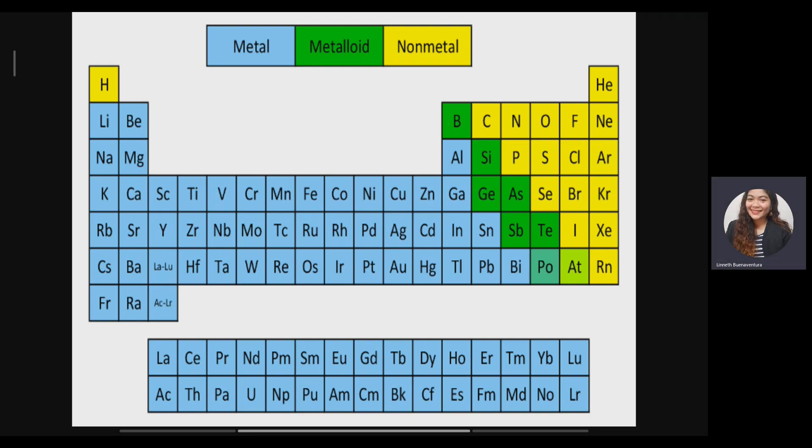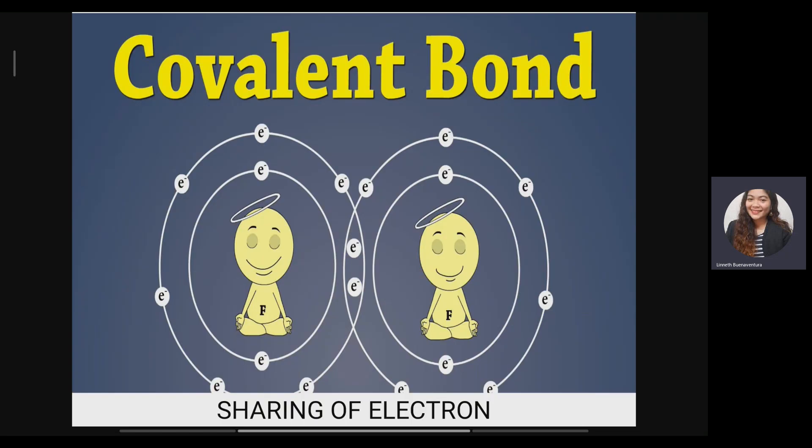For example, nitrogen oxide — nitrogen is non-metal, same as oxygen — so this is an example of a covalent bond where they share electrons. Lithium fluoride: lithium is metal, fluoride is non-metal — so it is an ionic bond. Copper and nickel are both metals — so they form a metallic bond. That is how we can easily identify the type of chemical bond based on the nature of their elements.